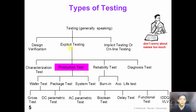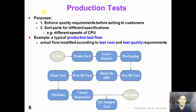Now we will look into more details about production tests. The purpose of production tests is twofold. First of all, we need to ensure the quality of the ICs before selling them to our customers. And second, we want to sort our ICs for different specifications.